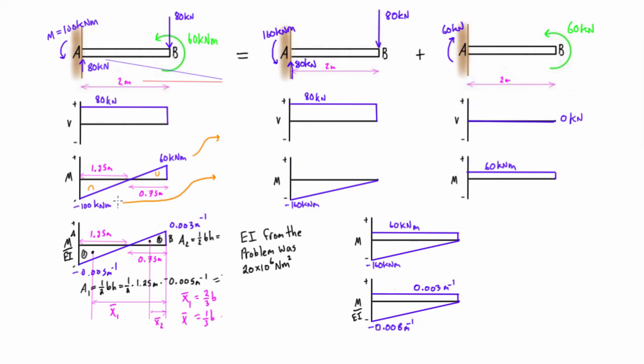For a cantilever beam, we pick the fixed end as point A and the free end as point B. Then we do our first moment area theorem to get the relative angle of the tangent line of B relative to A, which for a cantilever beam is the actual end slope at point B. We also do the second moment area theorem to get the tangential deviation, which is the actual end deflection of the free end.